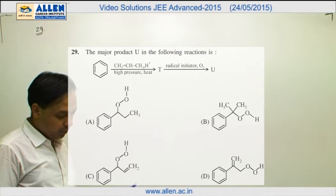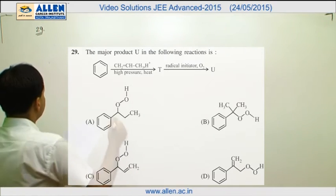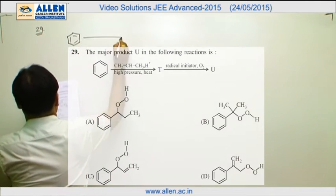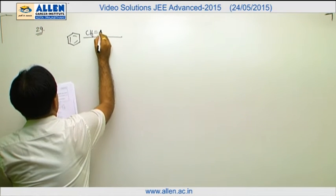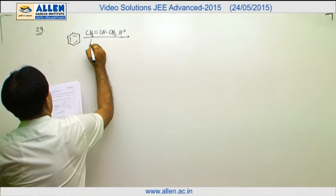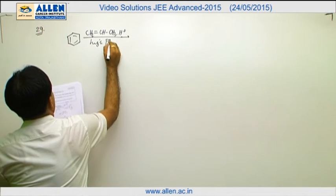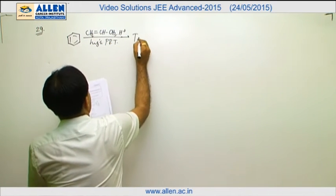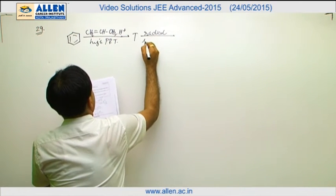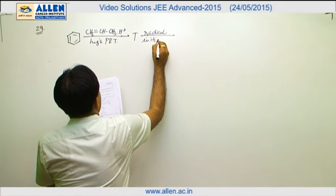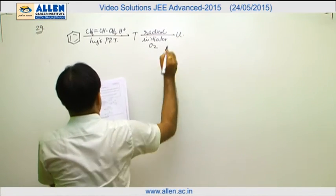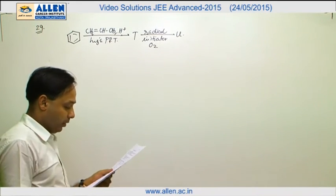The question is: given the major product U in the following reactions. A benzene ring reacts with propene in the presence of H⁺ at high pressure and temperature. It first forms T, which undergoes reaction with a radical initiator like oxygen to give U. What is U? Find the major product.